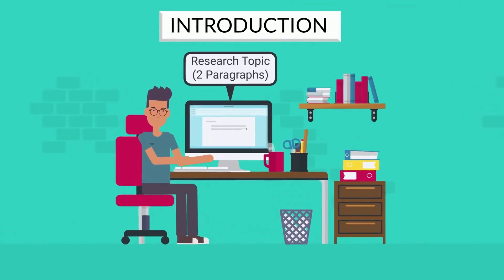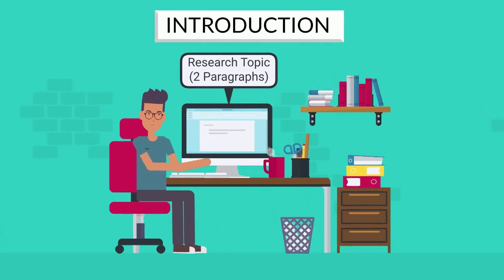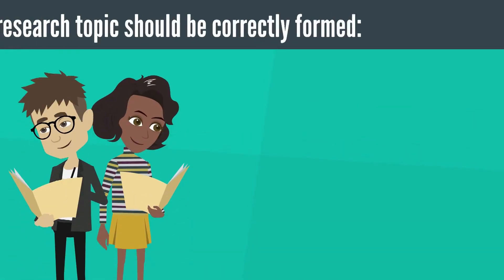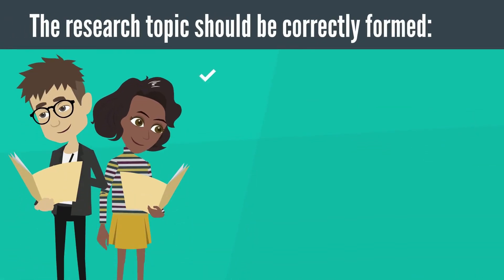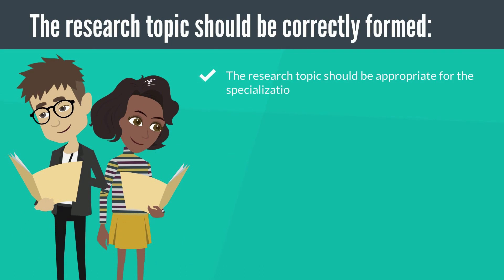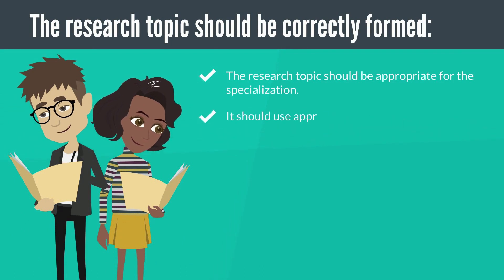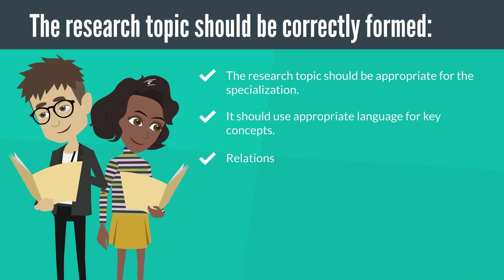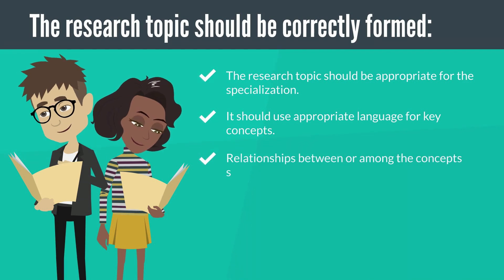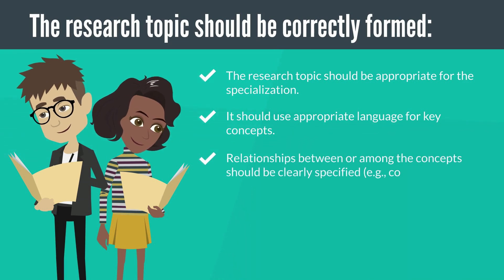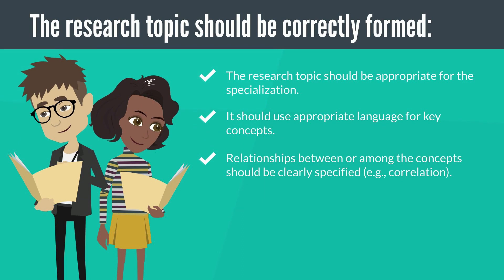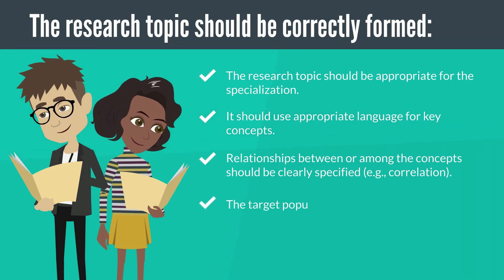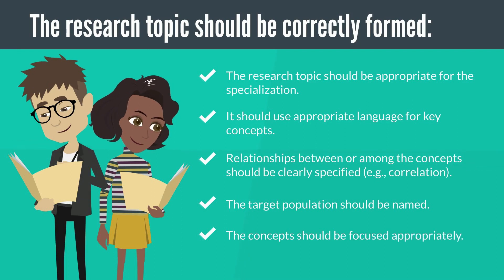In your introduction, over two paragraphs, you specify the research topic and tell why it is worth investigating. The research topic should be correctly formed and appropriate for the specialization. It should use appropriate language for key concepts, and relationships between or among the concepts should be clearly specified — for example, correlation. The target population should be named, and the concepts should be focused appropriately.